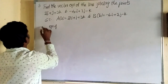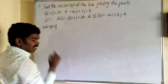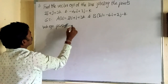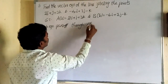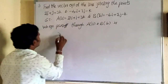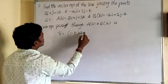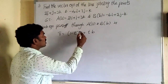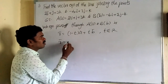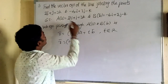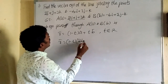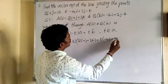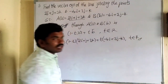Therefore, substituting: r̄ = (1 − t)(2i + j + 3k) + t(−4i + 3j − k), where t belongs to real numbers. Expanding the i-coefficient: (1 − t)×2 = 2 − 2t, plus −4t gives 2 − 6t. The j-coefficient: (1 − t)×1 = 1 − t, plus 3t gives 1 + 2t. The k-coefficient: (1 − t)×3 = 3 − 3t, plus −t gives 3 − 4t.